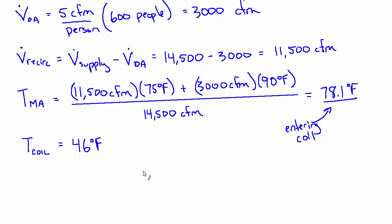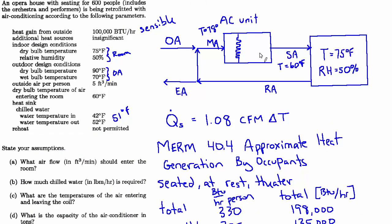And so if we want to look a little deeper into what's really going on, inside this AC unit, there's almost definitely a bypass. So rather than 100% of the mixed air volume, 14,500 CFM hitting the coil,